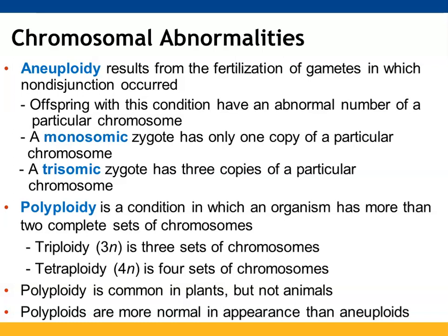Polyploidy is when you get multiple complete sets of chromosomes — you can have triploidy and tetraploidy. Having those extra sets of chromosomes in plants allows them to produce multiple amounts of gene products. This is why, especially in fruits and vegetables you buy at stores, polyploidy helps make them more hearty.